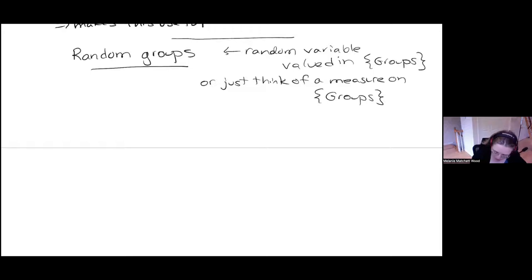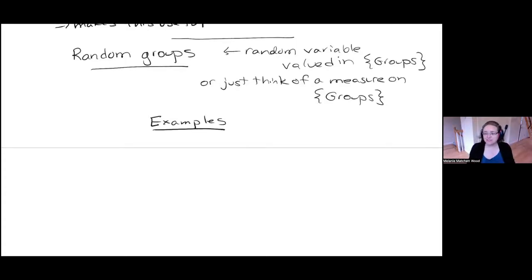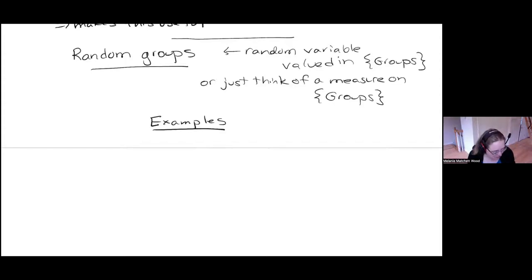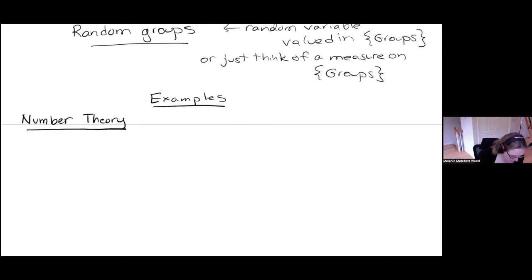I'm interested in such distributions of groups, and I would like to be able to do a similar kind of thing — to recognize various important distributions of groups by some kind of averages or moments. To talk about this, it makes sense to tell you a little bit about where my motivation comes from and what kind of groups I'm thinking about. Here are some examples. You don't have to know all the technical details, but I hope it will give you the flavor of what kind of groups I'm thinking about. The first example comes from number theory.